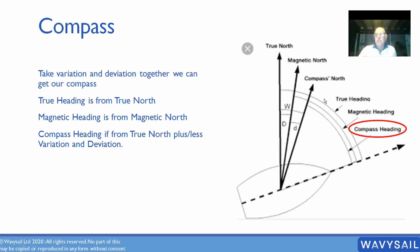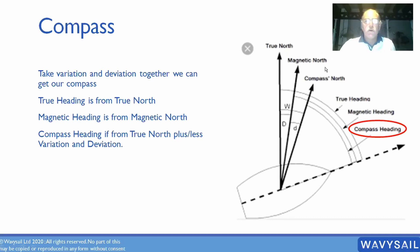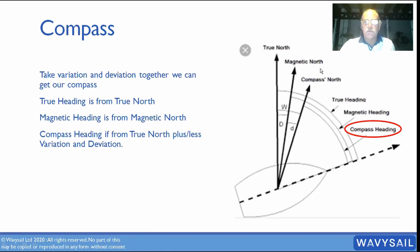A magnetic handheld compass — you can't make a deviation card for it because you move around the boat with it, and then move it to another boat where the deviation will be different. So you don't make deviation cards for handheld compasses, only for fixed compasses.